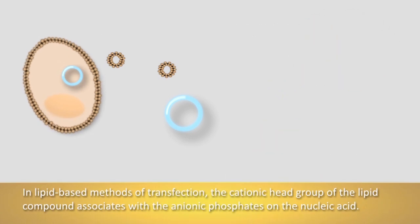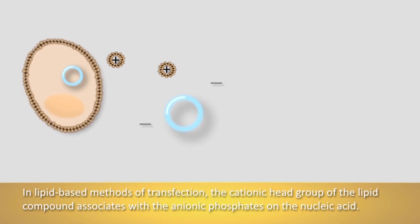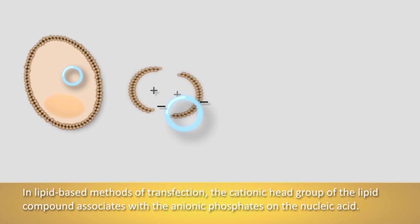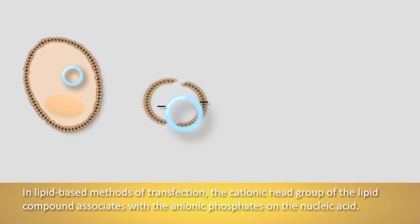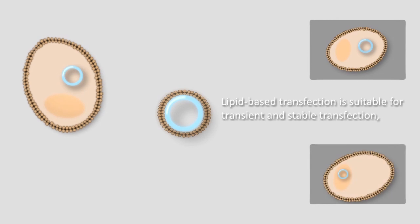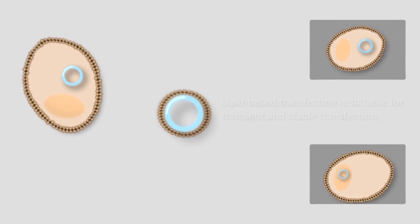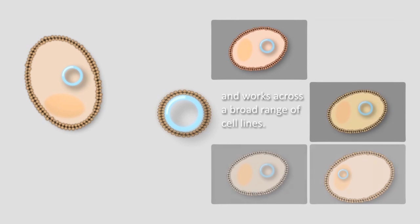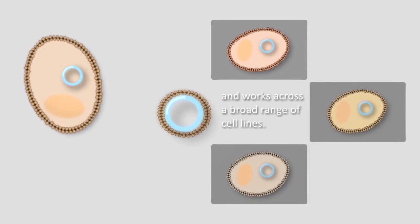This animation focuses on lipid-based transfection, where the cationic head group of the lipid compound associates with the anionic phosphates of the nucleic acid. This method is suitable for transient as well as stable transfection, achieves high efficiencies, and works across a broad range of cell lines.